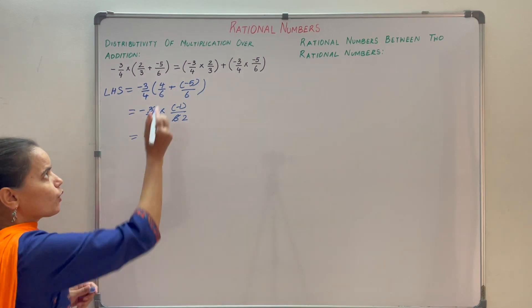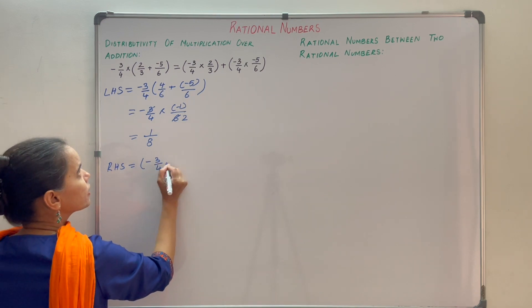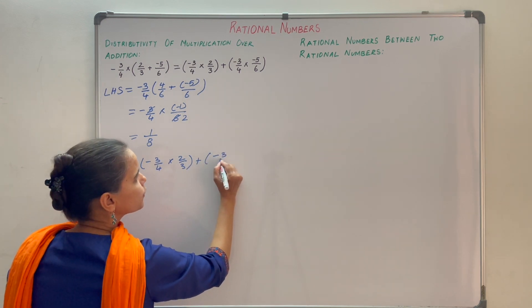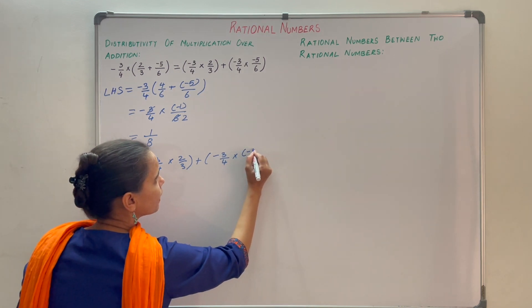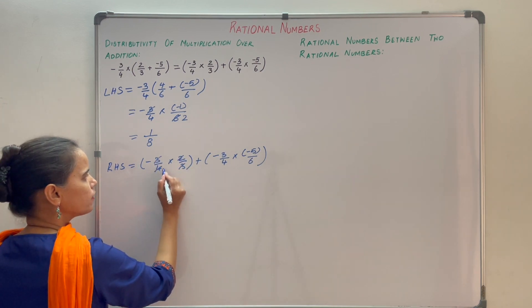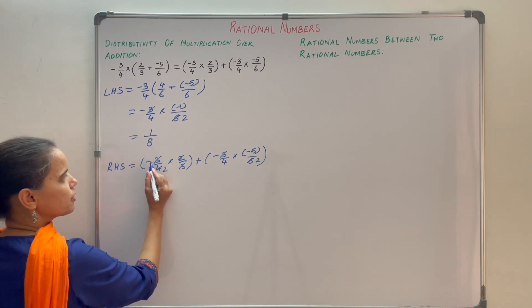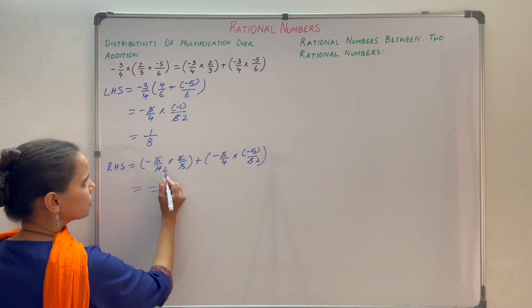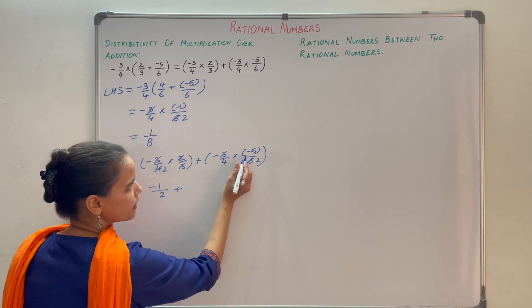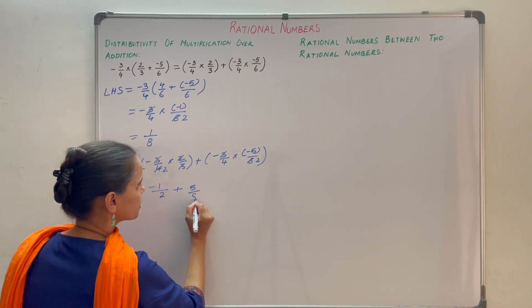Now on the right-hand side we have minus 3 by 4 into 2 by 3, plus minus 3 by 4 into minus 5 by 6. For the first term, cancel 3 and 3, and cancel 2 and 4 to get 2 — so minus into plus is minus, giving minus 1 by 2. For the second term, cancel 3 and 6 to get 2 — minus into minus is plus, giving 5 by (4 into 2), which is 5 by 8.